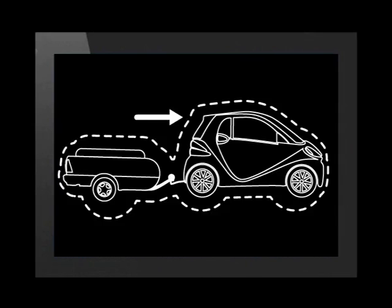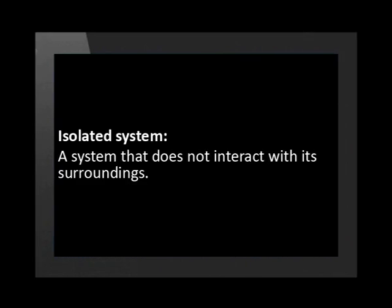If we draw an imaginary box around such a system, then an external force is one that is applied by an object or a person outside the box. The car pulling the trailer would be considered an isolated system if it has no external net force acting on it.